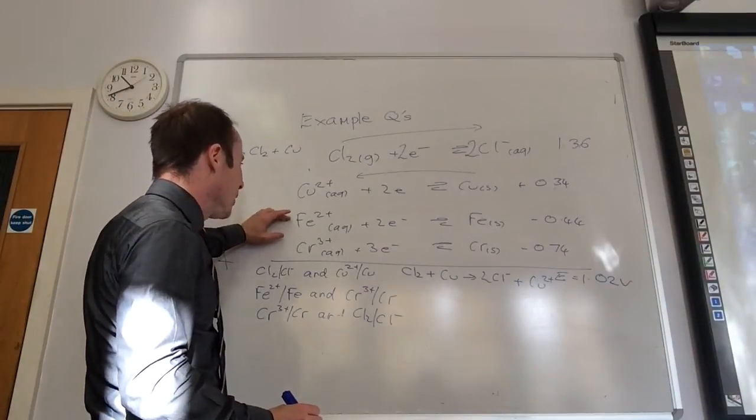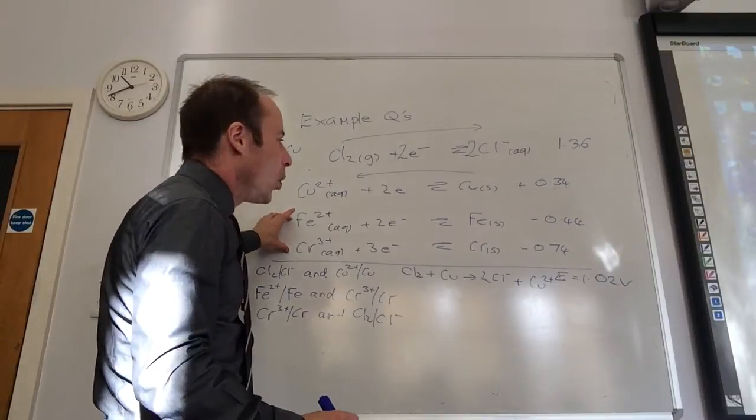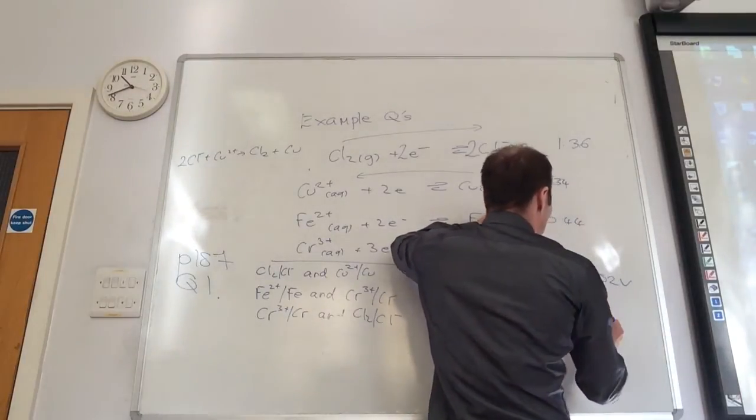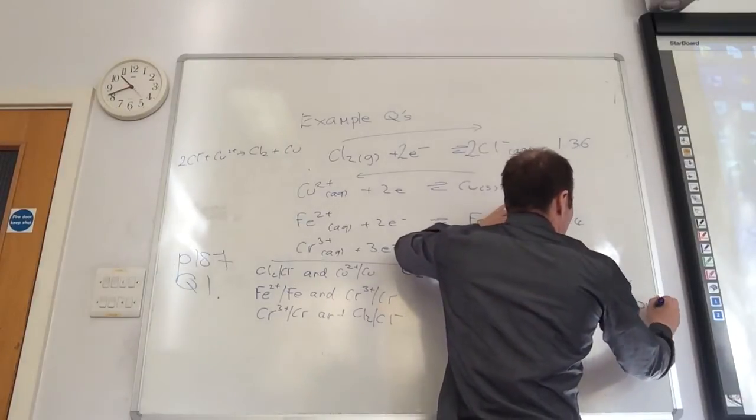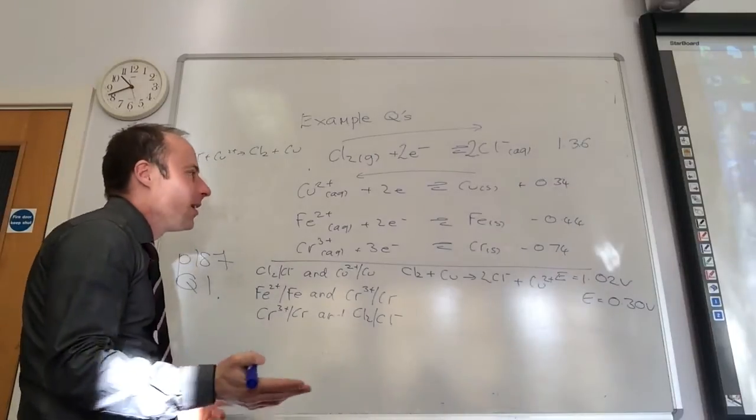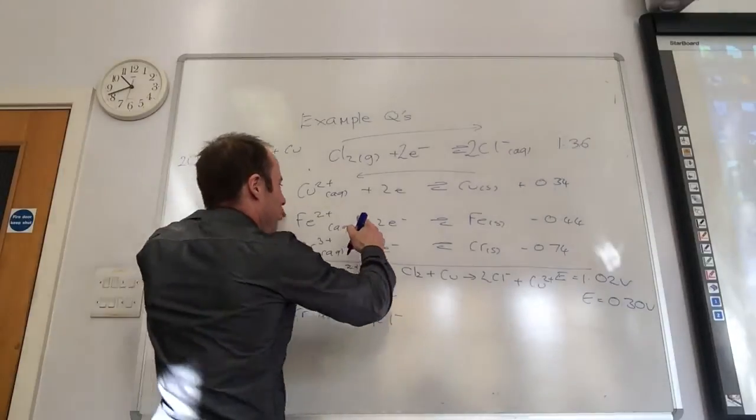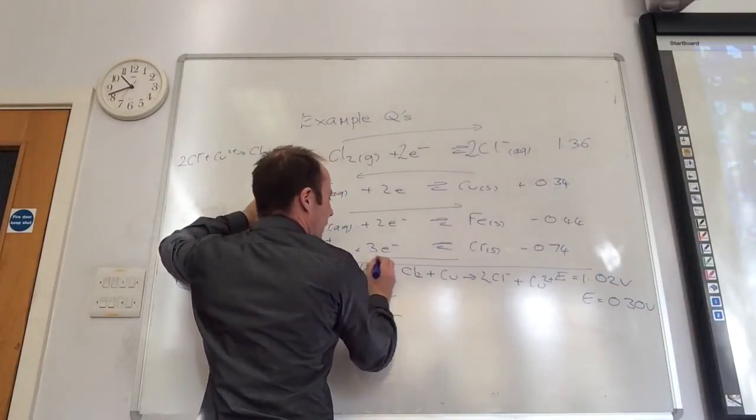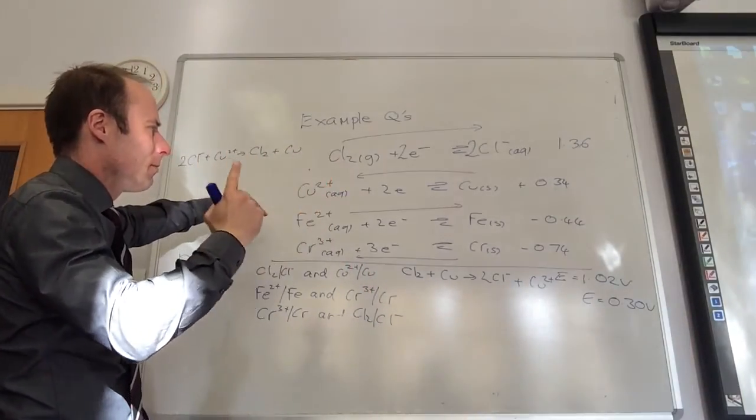So first of all, I've got Fe2 plus and iron and chromium 3 plus. What is the difference between minus 0.44 and minus 0.7? 0.3. Yeah, 0.3 plus. Which is the most positive? This one is most positive. So that one's going to be reversed. But remember, my electrons must match.